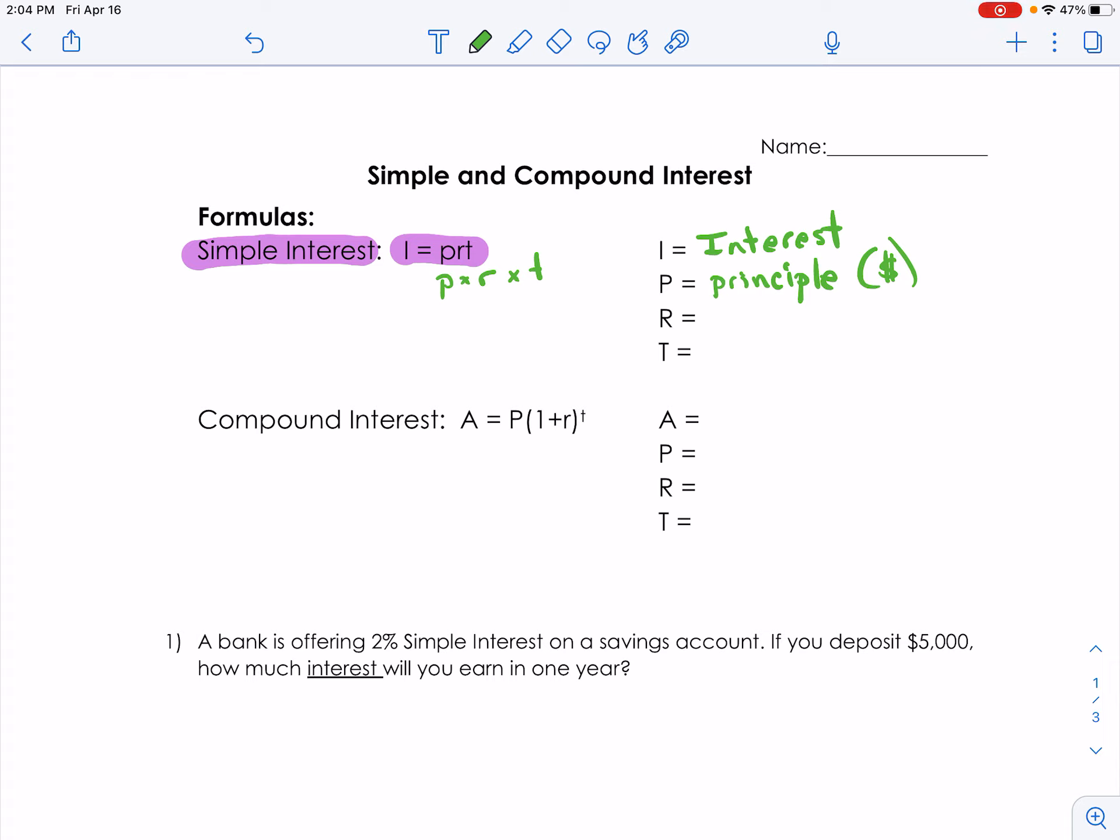R stands for rate. The rate is normally a percent, but we have to change it to a decimal. Remember, a percent is not a real number. A percent is just part of a number, it's the part out of a hundred.